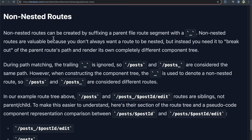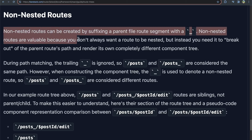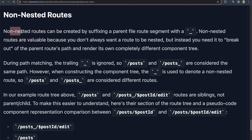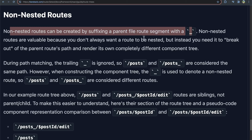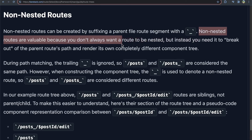For more clarity, TanStack describes non-nested routes well in their docs. We'll first cover a conceptual overview of what non-nested routes are and how they work in TanStack, then get into an actual demonstration. Non-nested routes can be created by suffixing a parent file route segment with an underscore. They're valuable because you don't always want a route nested — sometimes it needs to break out of the parent's route path and render its own completely different component tree.